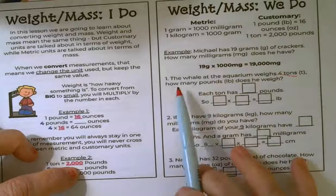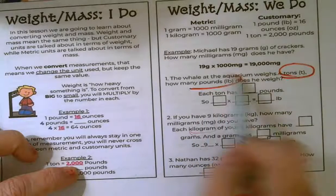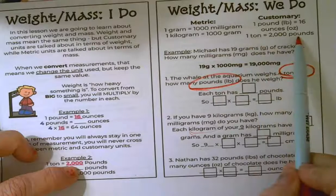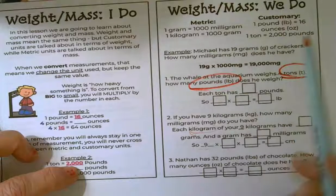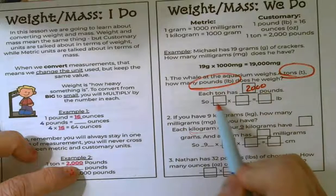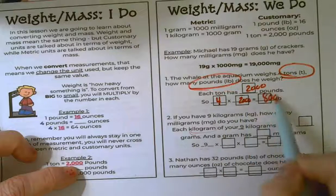The first one was about a whale at the aquarium with four tons, how many pounds was this? So we're converting from tons to pounds. That's one step down. We're going from larger to smaller. So each ton has 2,000 pounds. So that's going to be four of those tons times the 2,000 pounds and you would have gotten 8,000 pounds.